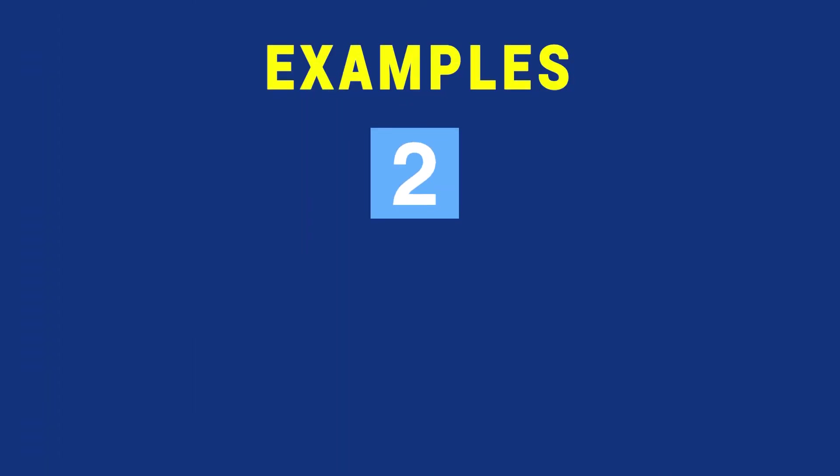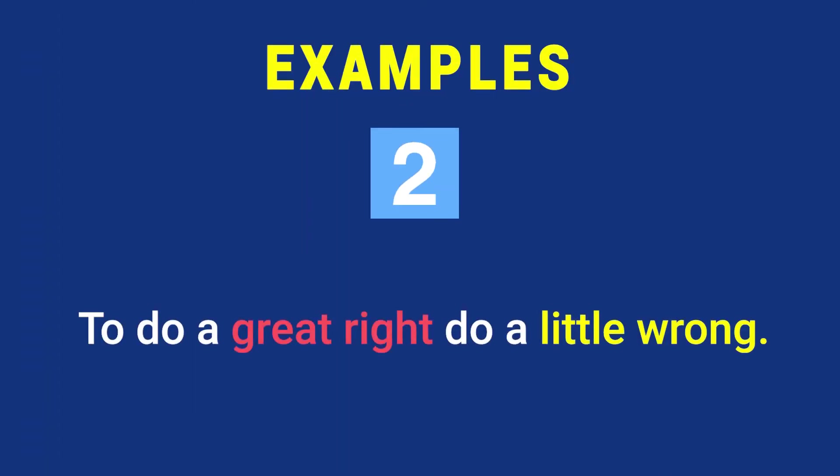Example number two: 'To do a great right, do a little wrong.' Here, doing great right and doing a little wrong are contrasted ideas. Word-wise, great is contrasted to little and right to wrong. Therefore this is an antithetical statement where contrasted ideas are set together to create emphasis with perfect balance.